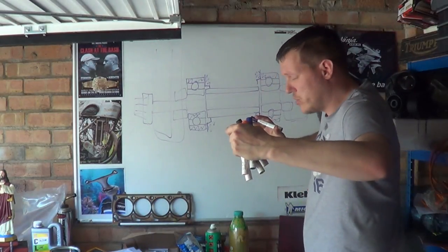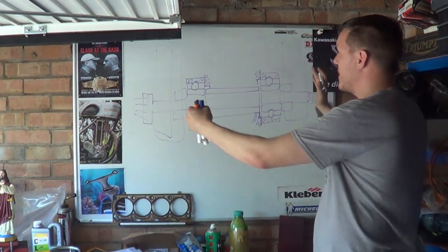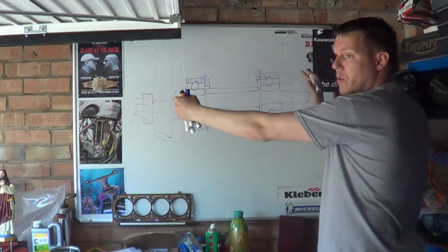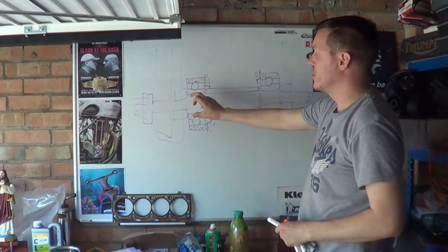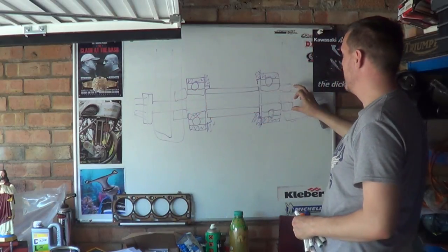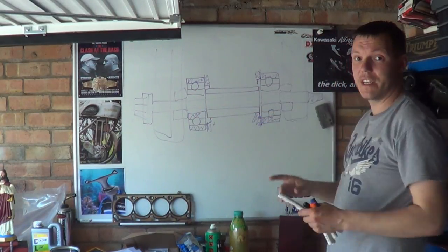When you start clamping this down, you can literally squash all of this together. Your swing arm or your forks start to come in, and then the spacer pushes on the bearing. The bearing pushes in the spacer, the bearing pushes in.